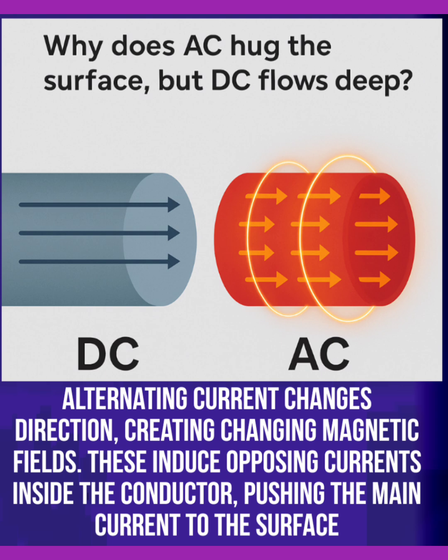DC current flows in one direction only. We can observe this in the picture, and also observe the alternating current in the conducting material.